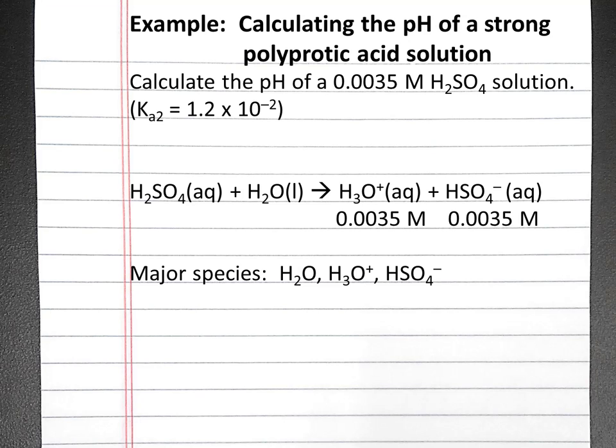Our next step is to write the equilibrium expressions for each of the species that will produce hydronium ions. The autoionization of water is shown here, and the equilibrium constant for this reaction is Kw.